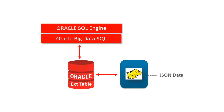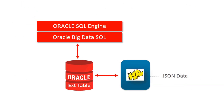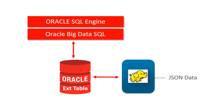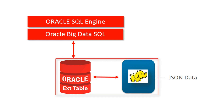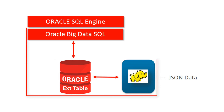So how is a query against JSON data accomplished? You simply create an Oracle external table that references the JSON data. Then, Big Data SQL enables you to query the JSON data directly in its local storage location, leveraging data-local processing to return the query results.